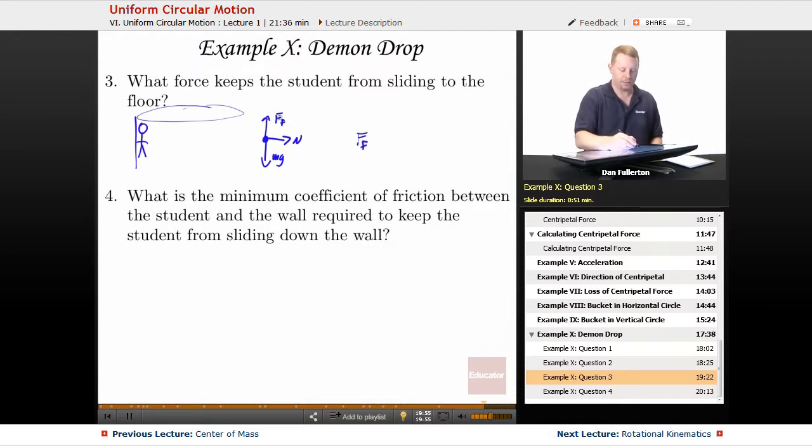How do you get a big force of friction? Remember, force of friction is mu times the normal force, so you must have a big normal force. And that's what's causing. The centripetal force is the normal force. So force of friction keeps a student from sliding.